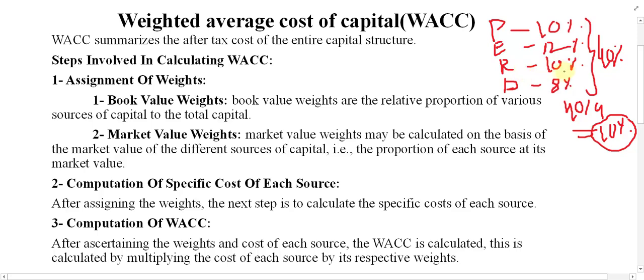On an average basis, finding out preference cost, equity cost, retained earnings, and debt individually is not enough — we have to find out the average cost of capital. This is needed because the amount of money received from equity, preference, and debt may all be different, which is why we calculate the weighted average cost of capital.